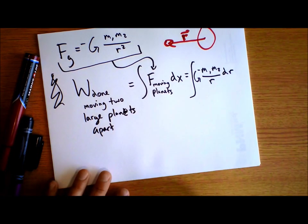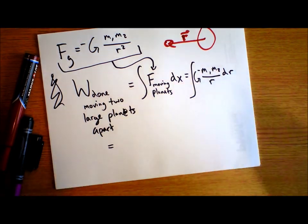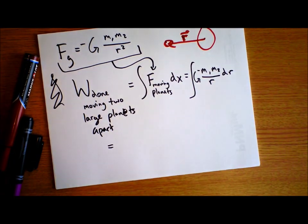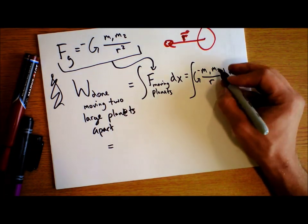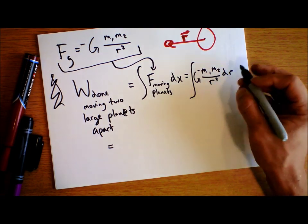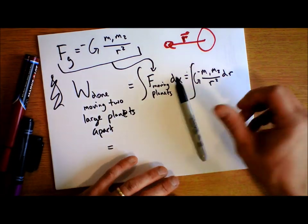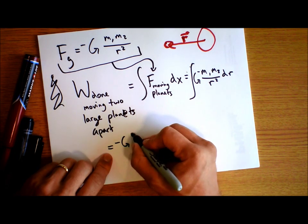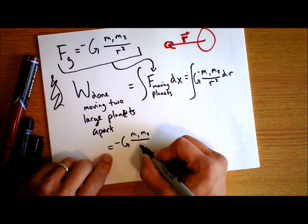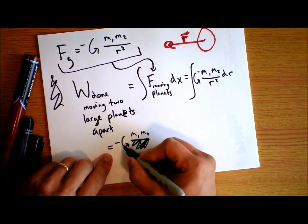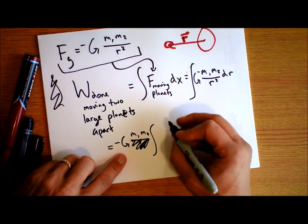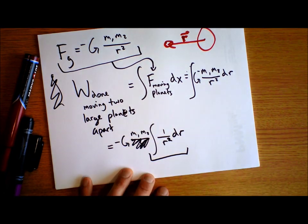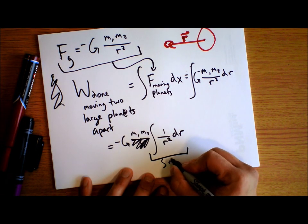There is a minus sign in this force because it's attractive. So we have negative G times m₁ times m₂ times the integral of 1 over r squared dr. G, m₁, and m₂ don't change as the planets move apart, so we pull them out. This integral is the same as the integral of r to the negative 2 dr.